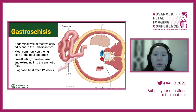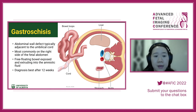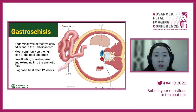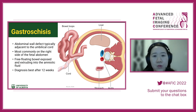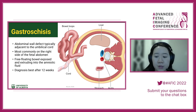Gastroschisis: we're looking for a defect typically on the right side of the umbilical cord insertion. Scanning down to the level of the umbilical cord insertion, we can see free-floating bowel loops outside. The diagnosis can be overcalled before 12 weeks due to physiologic gut herniation, so it's best confirmed after 12 weeks.